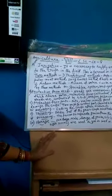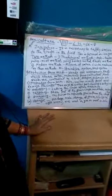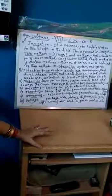One is the chemical method and one is the biological method. In chemical methods, chemicals like DDT and BHC are used.